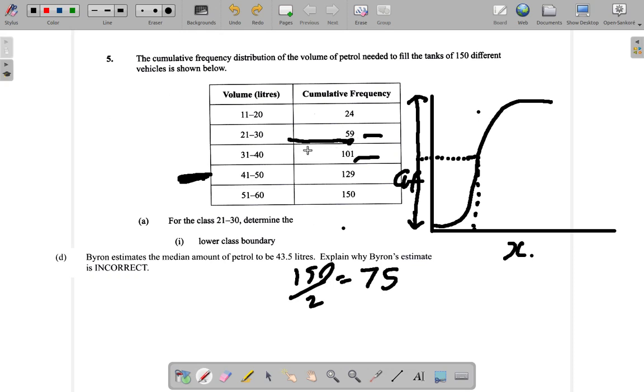And the 101 would end at the 31 to 40 class. But the thing is, that value of 75 on the cumulative frequency would not be within the 41 to 50 class. It would be in probably the 21 to 30 class. So, what you could say is that halfway along the cumulative frequency, it would be half of 150, which would be 75. And then, that class of the cumulative frequency of 75 would not appear in the class which contains the 43.5. It would appear in a lower class. So, that's why Byron would be incorrect. You put it in your own words. But it's important that you understand the concept as to why Byron would be wrong in this case.